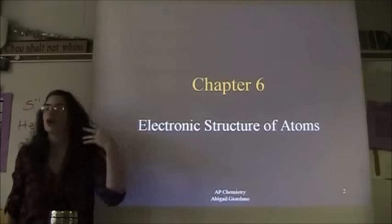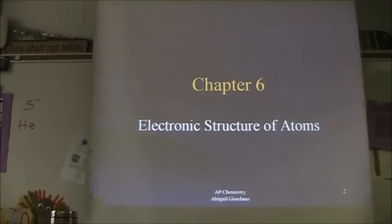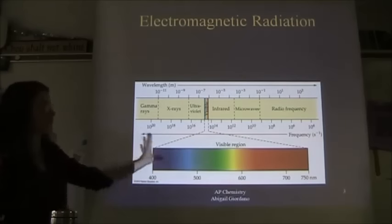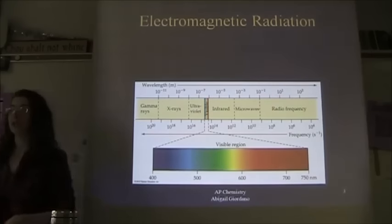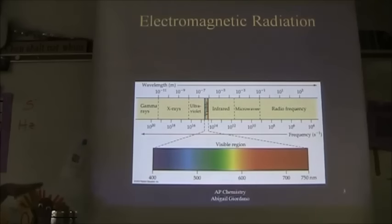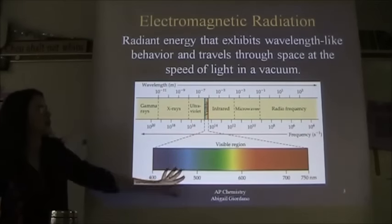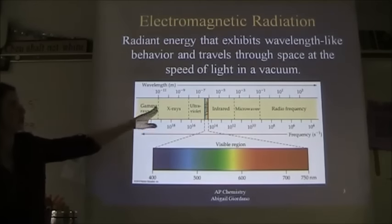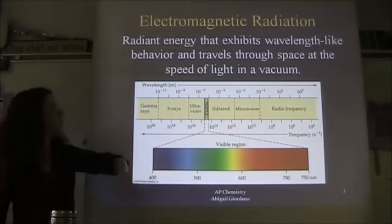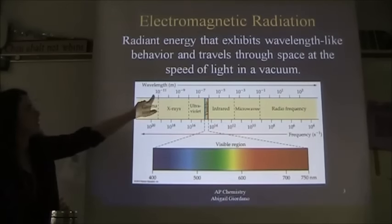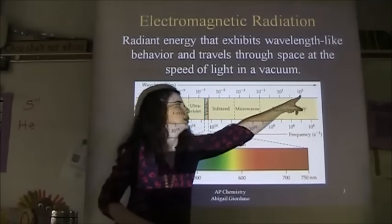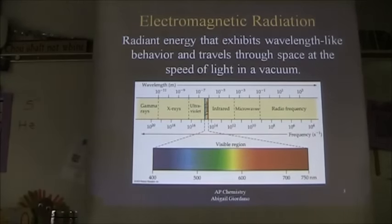Chapter six is all about electrons — what are they doing, where are they, what's happening. The first thing that comes up is something that should be familiar from Chem 1: the electromagnetic spectrum, or electromagnetic radiation. There are all types, and we'll talk about some of them. On this graphic, you have different types of electromagnetic radiation, and along the top you have wavelengths in meters — very short wavelengths and long wavelengths.